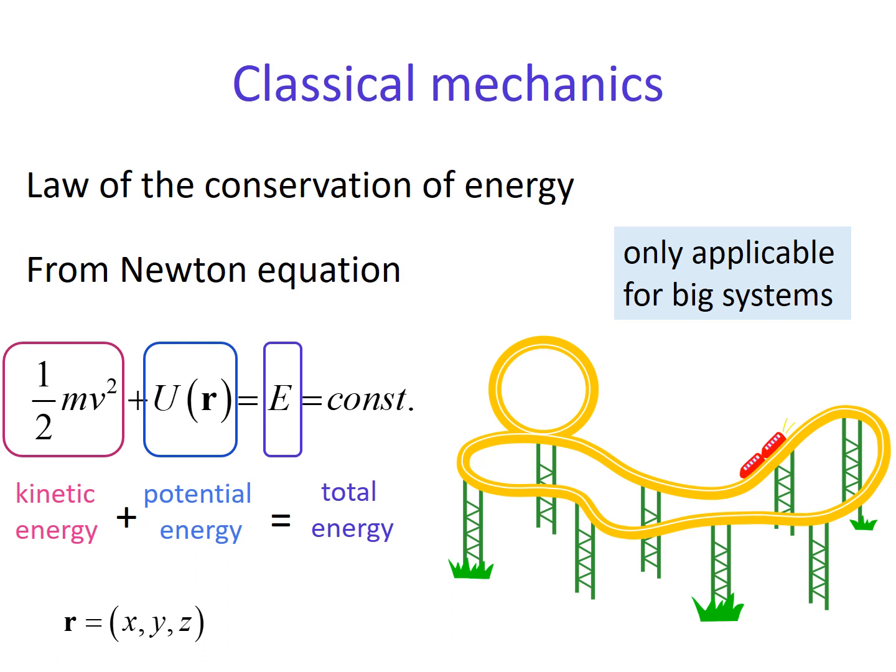If you ride on a roller coaster, you can understand this meaning. When you are on the top, potential energy is maximum and kinetic energy is minimum, and the speed is very slow. But when you go down, potential energy is minimum and kinetic energy is maximum, so the speed is fast. This equation is actually applicable only for big systems like visible things for us, balls or planets.